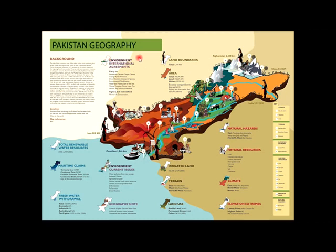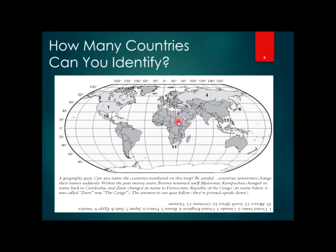This is the geography of Pakistan. Here we can observe the rivers, the cultivatable areas, the hilly areas, and Balochistan, which is also a hilly area. How many countries can you identify on this map? If given this task, you should study the world map and try to identify these countries.